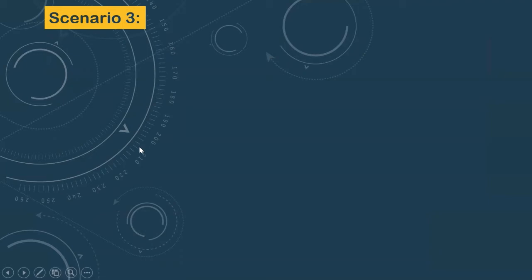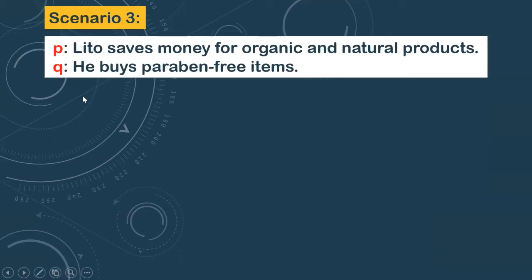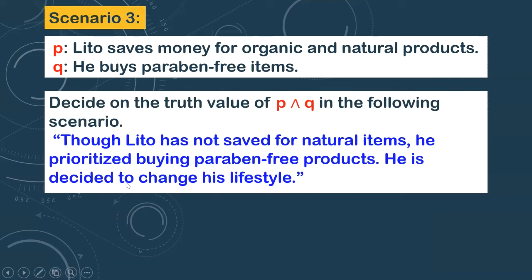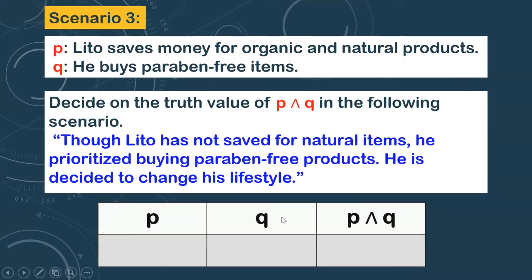Let's have the third scenario. Same propositions. The given scenario: 'Though Lito has not saved for natural items, he prioritized buying paraben-free products. He has decided to change his lifestyle.' To get the truth value of P, check if proposition P happened in the scenario — did Lito save money for organic and natural products? If you read the scenario again, no — 'Though Lito has not saved for natural items.' So the truth value of P here is false.